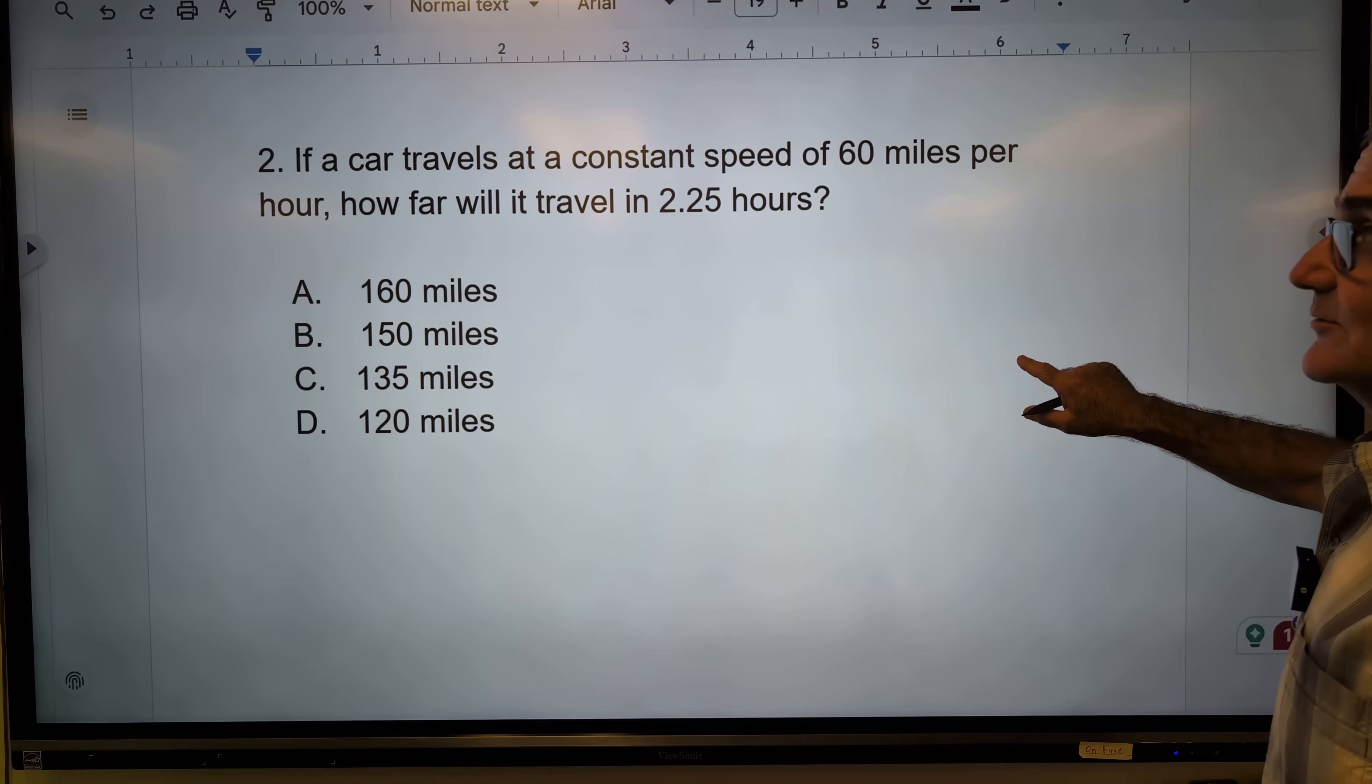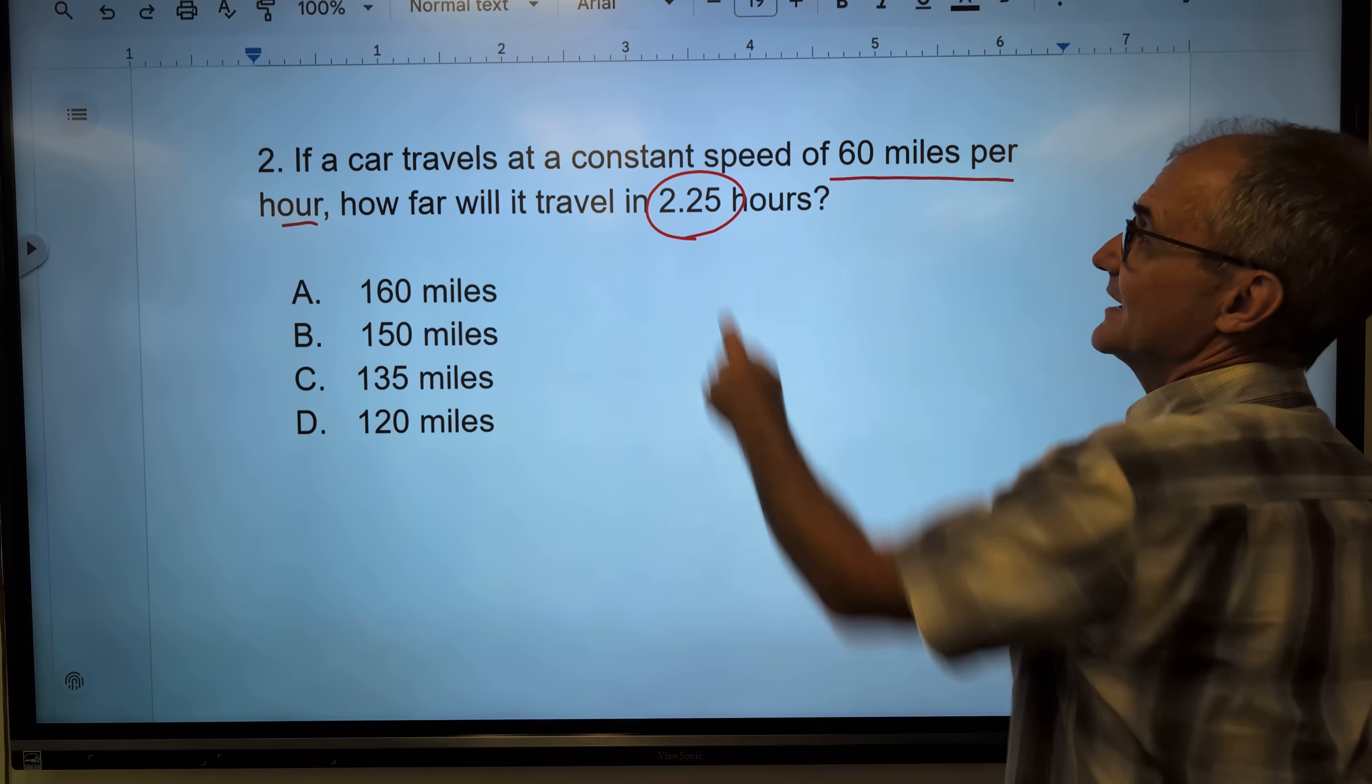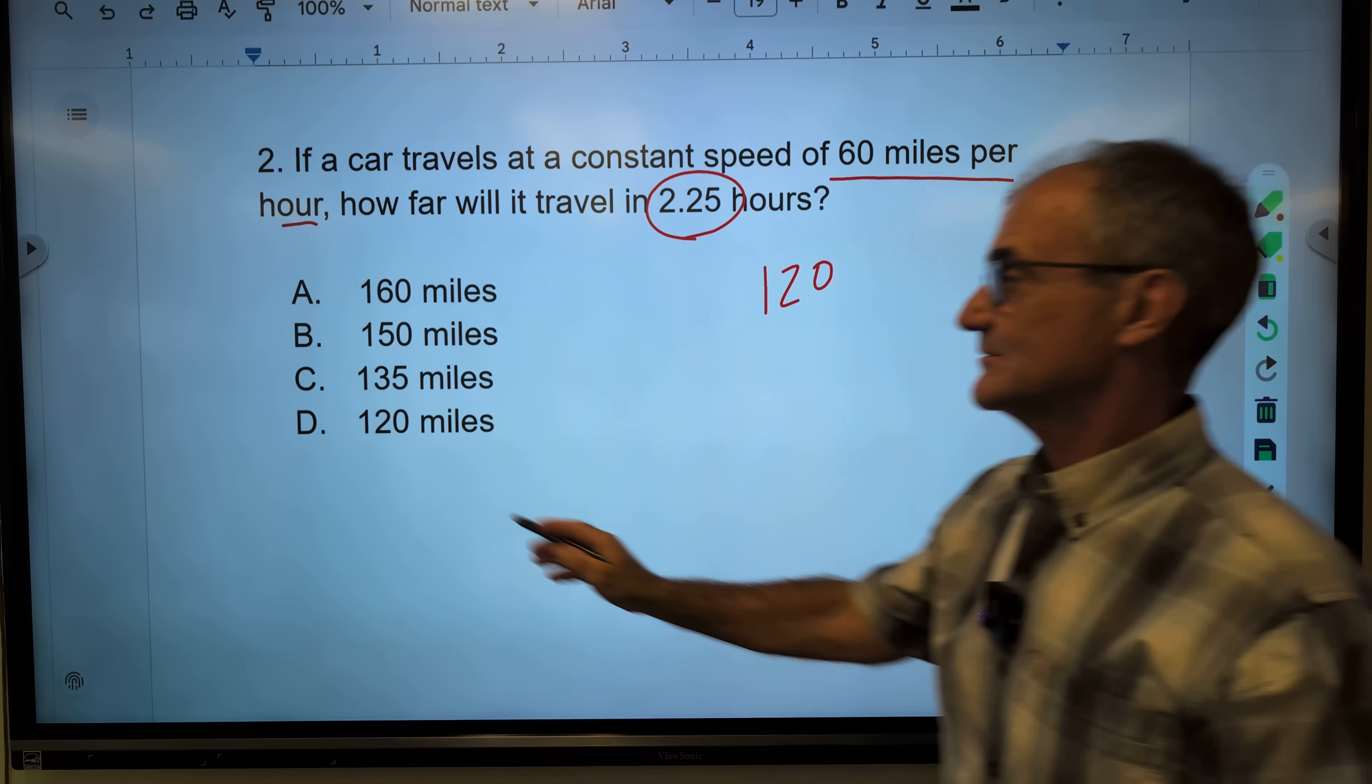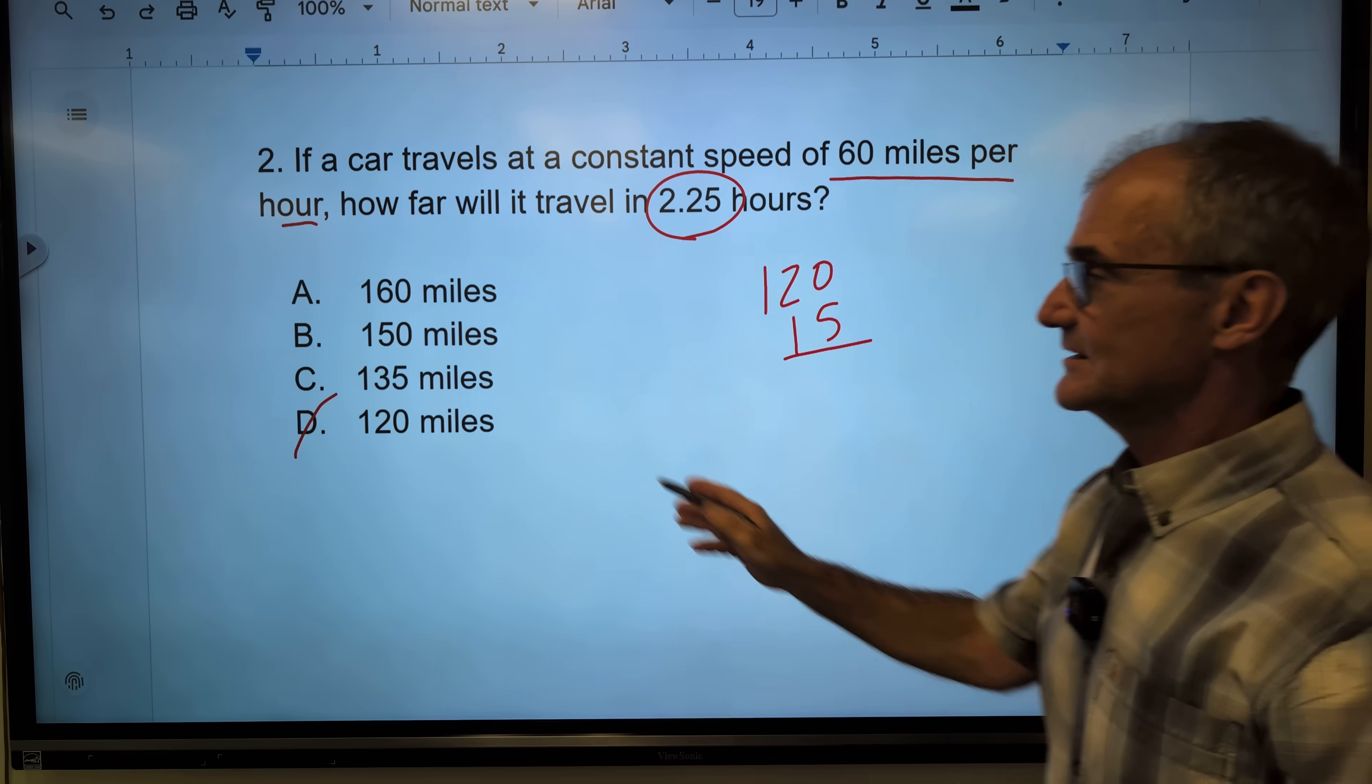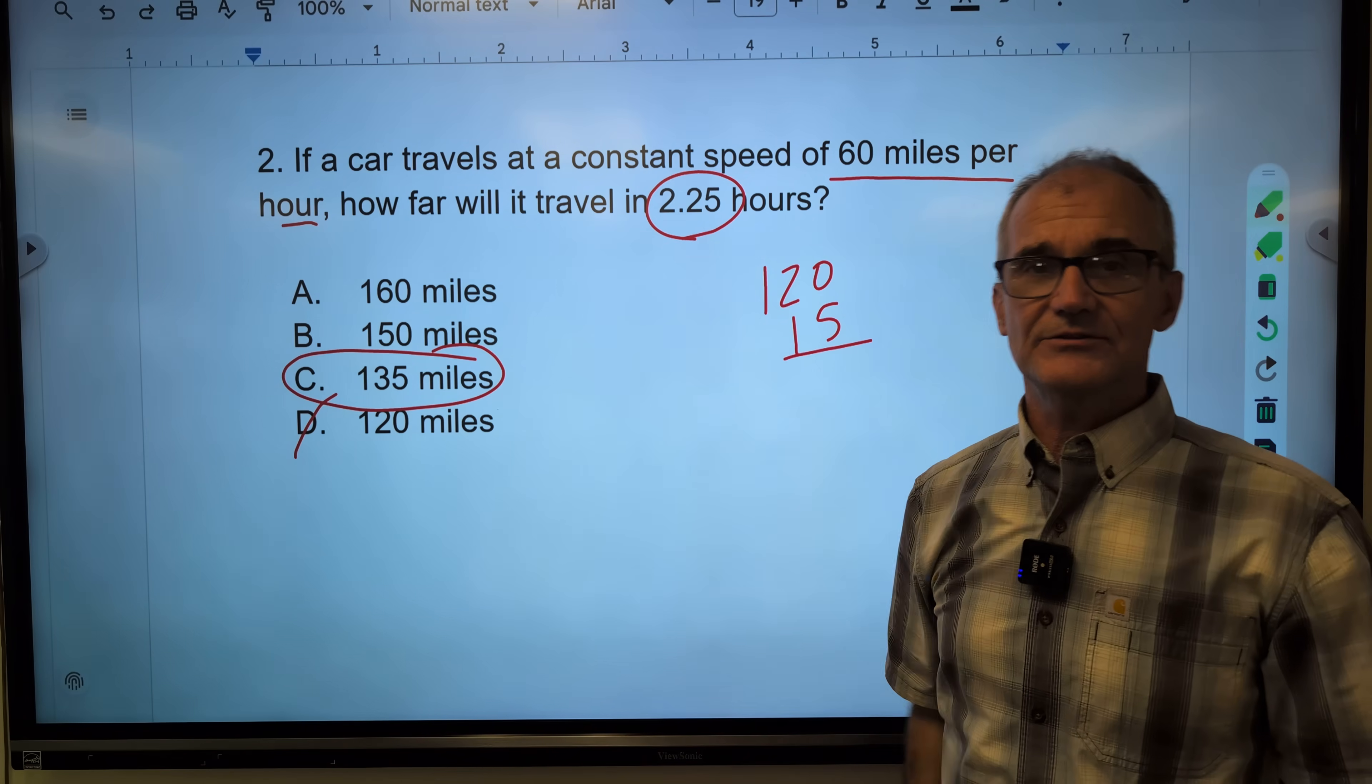Problem number two, a rate problem. Very common on the ASVAB mathematical knowledge. A car travels at a constant speed, 60 miles per hour. How far will it travel in 2 and a quarter hours? I need to do 60 times 2.25 miles per hour. Let me just do 60 times 2, that's 120. So it's got to be more than 120. Now I need to do a quarter times 60. Well, half of 60 is 30, half of 30 is 15. So a quarter of 60 is 15. Add the 2 and the quarter together to give me 135 miles. Correct answer, answer C.